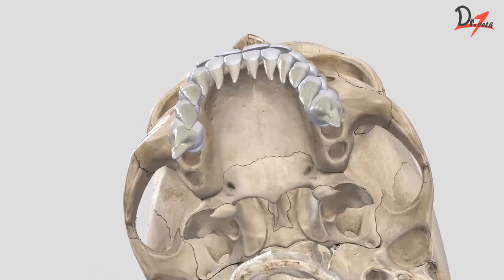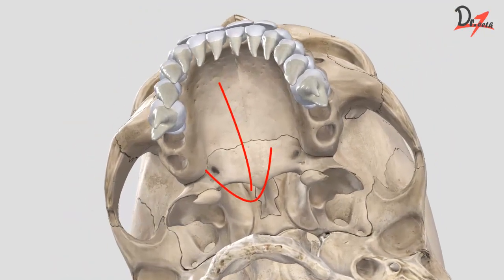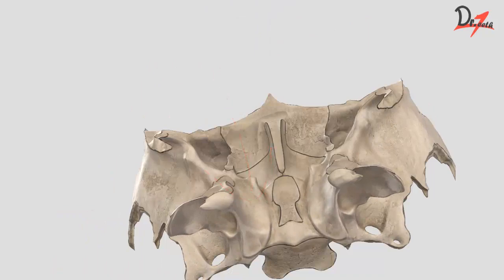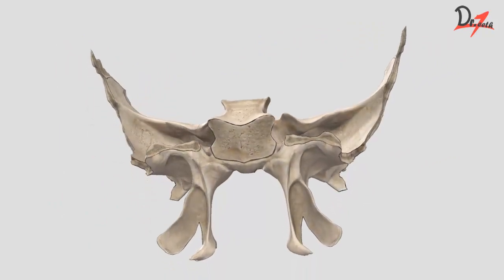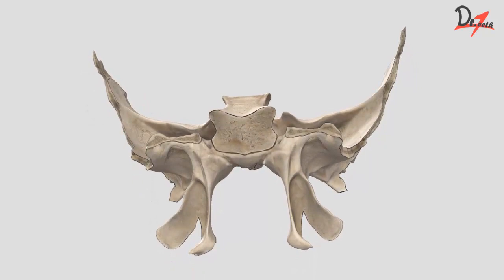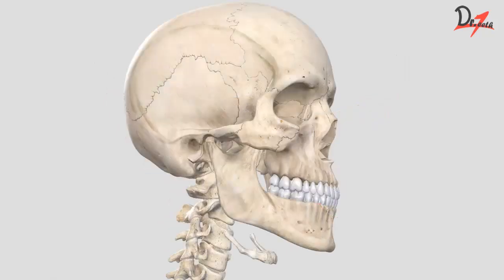Here we can see the sphenoid bone and appreciate the lateral and medial pterygoid plates. We can see the medial pterygoid plate and the lateral pterygoid plate. The deep head arises from the medial surface of the lateral pterygoid plate. Now for the insertion of the medial pterygoid: the fibers form a tendon and insert on the medial surface of the ramus of the mandible.